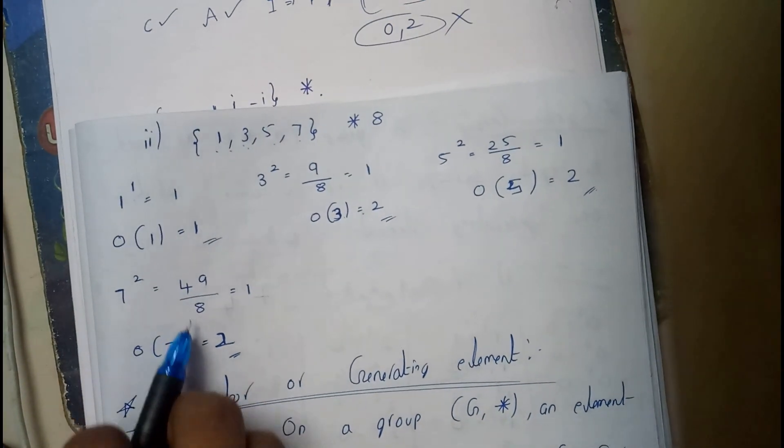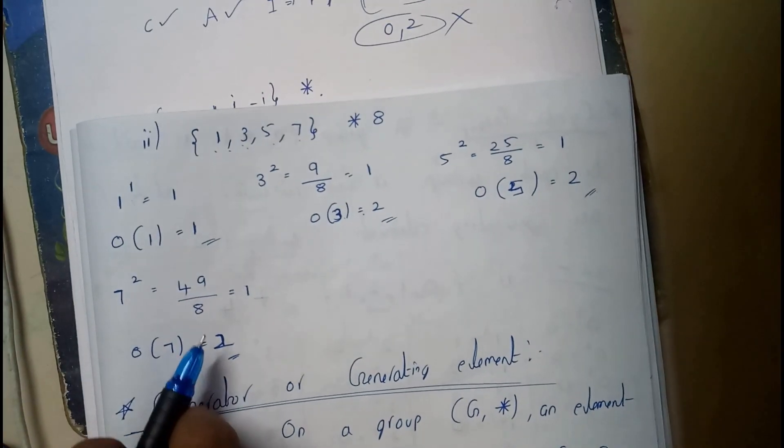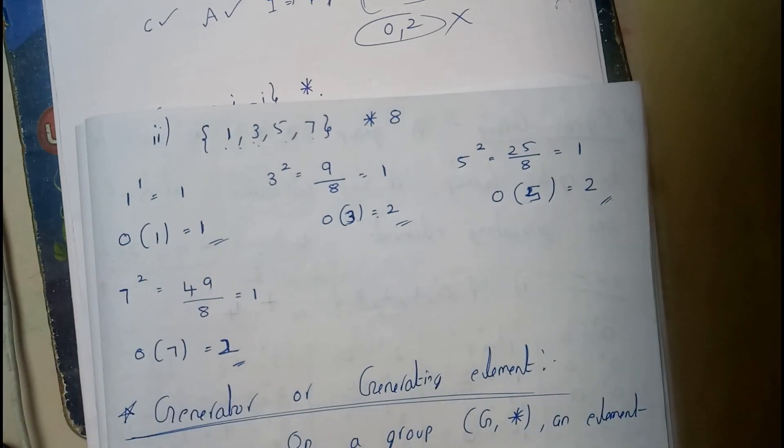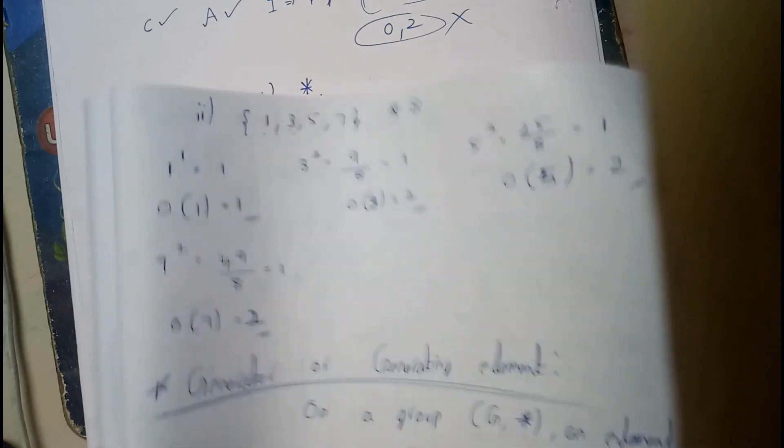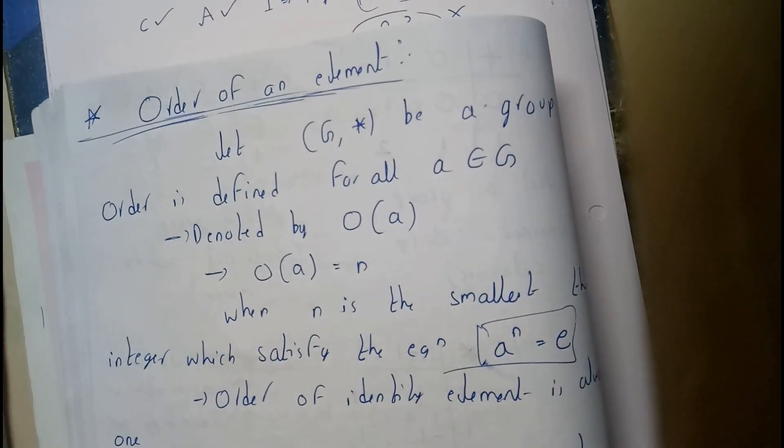7^2 is 49, and 49 mod 8 equals 1. So the order of 7 is 2. For all other elements, the order is calculated similarly. I hope you're clear with finite groups and order of an element.